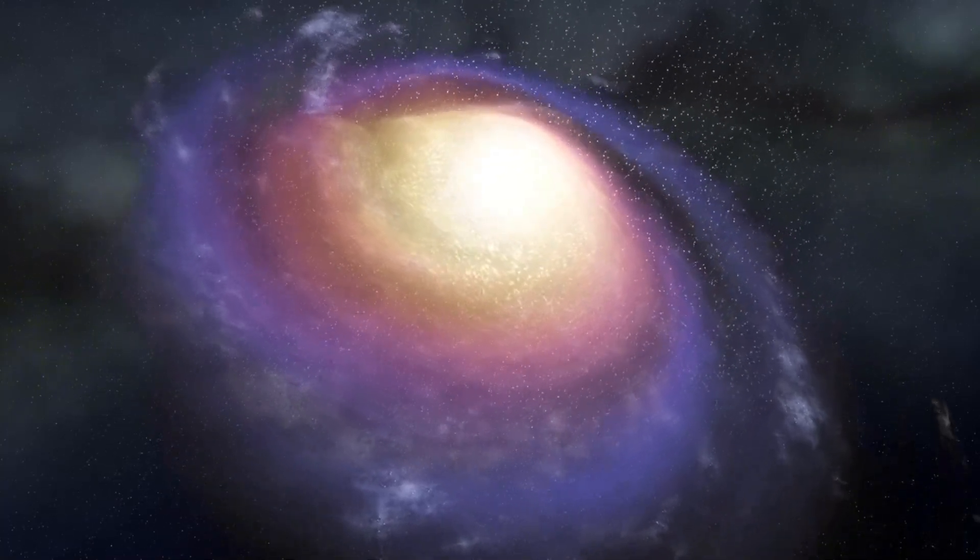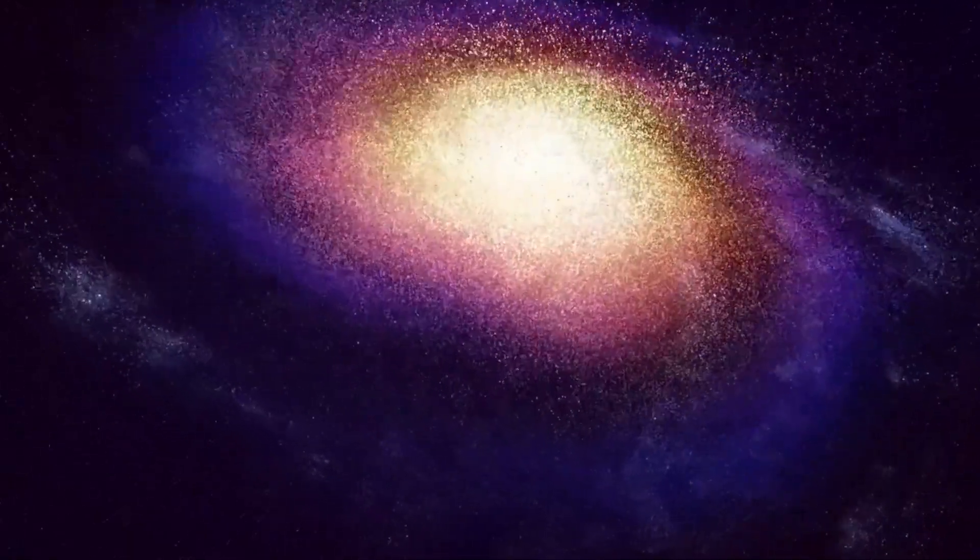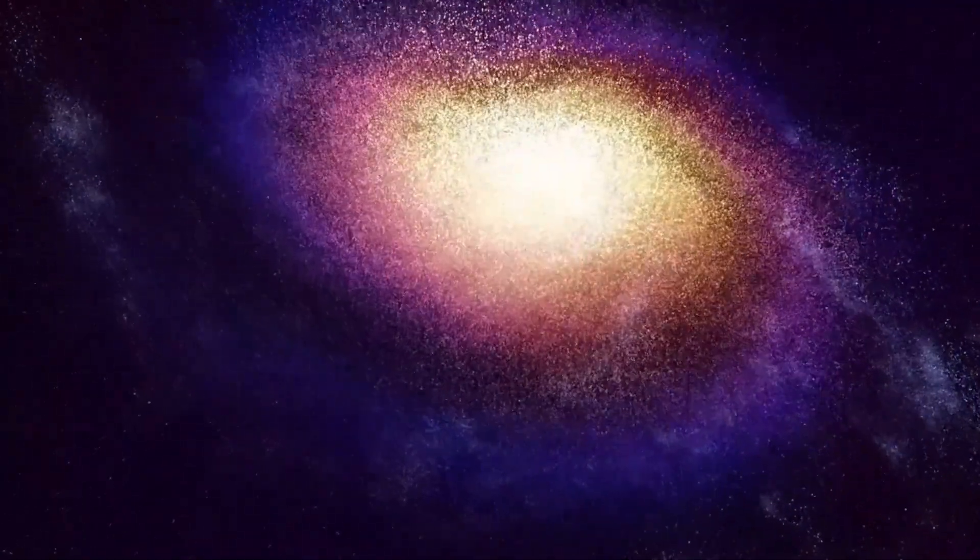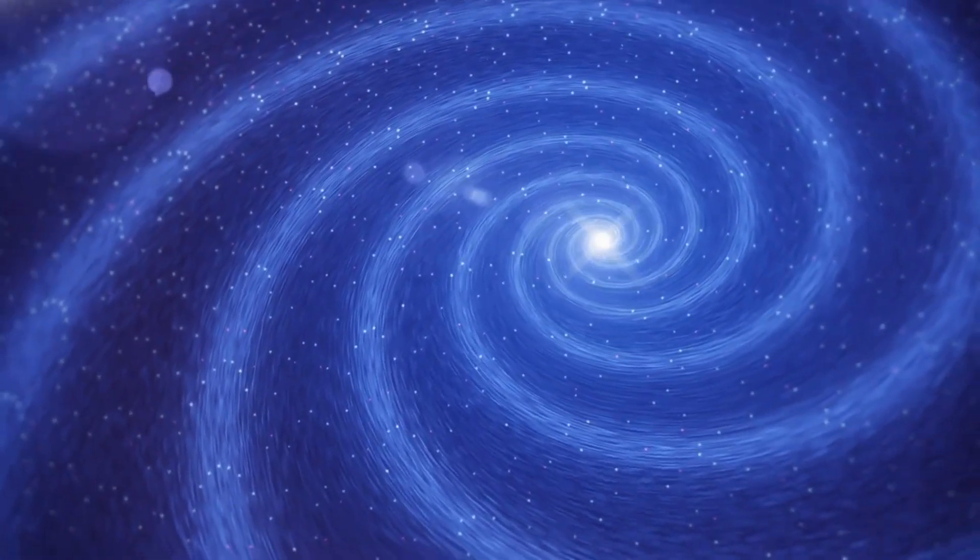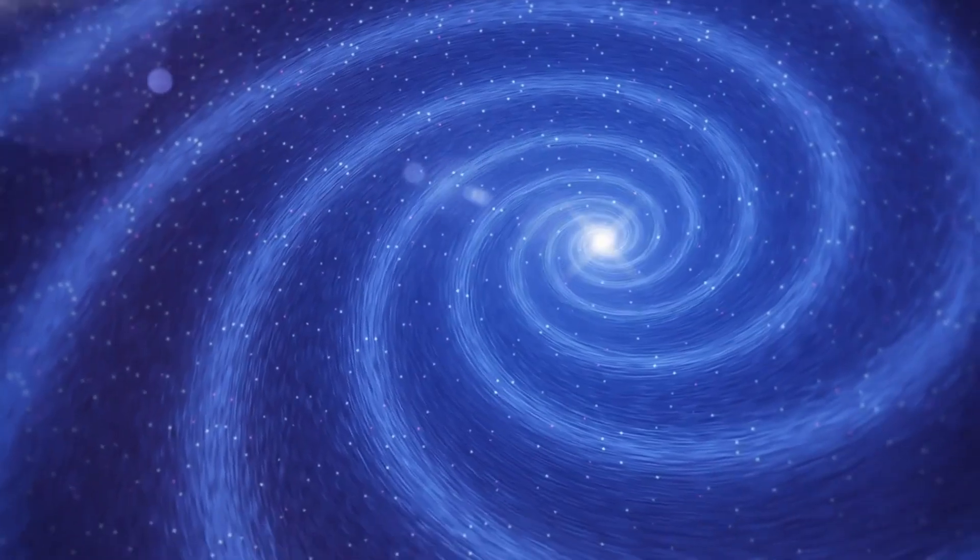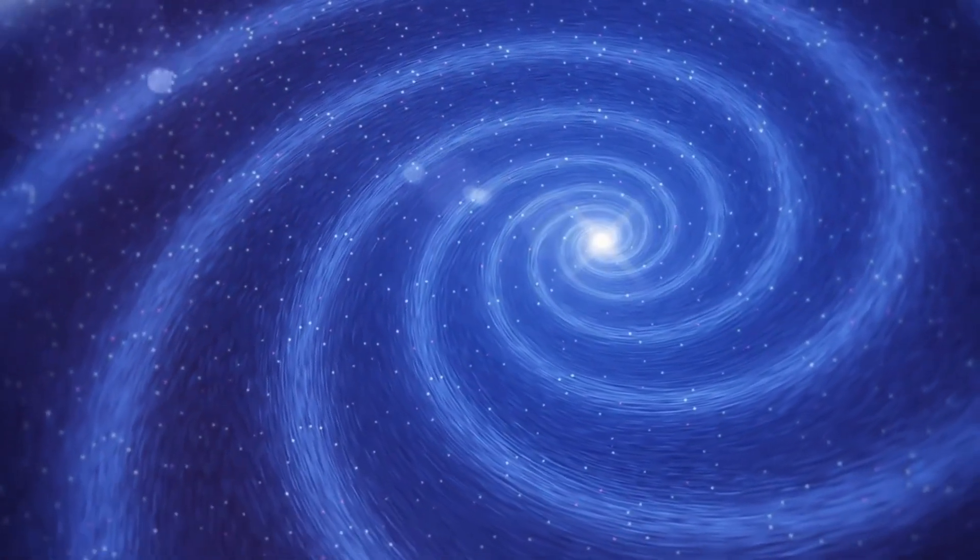The habitable zone, often referred to as the Goldilocks zone, is the region around a star where conditions are just right for liquid water to exist, a fundamental ingredient for life as we know it. Proxima B's location in the habitable zone has led to much speculation about its potential to support life.